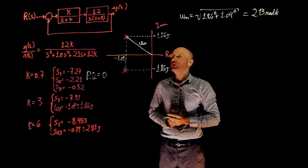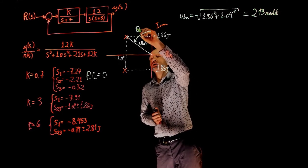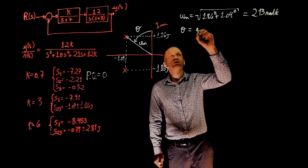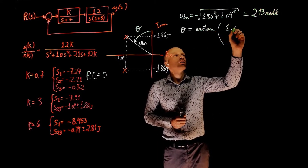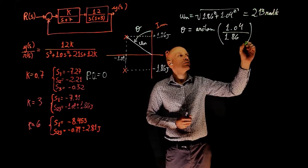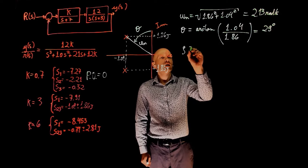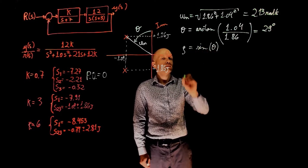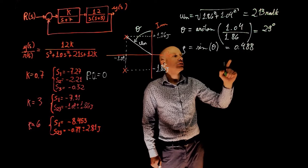Now we can find the damping ratio. And the damping ratio, as we know, is a function of this angle here between the imaginary axis and this line. Let's call this theta. Theta, using a simple trigonometric function, is the arc tangent of the real part divided by the imaginary part, 1.04 divided by 1.86. And this gives 29 degrees. Zeta is simply sine of theta, which is, in this case, sine of 29 degrees, 0.488. This is now the damping ratio.